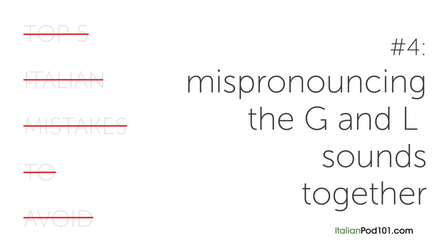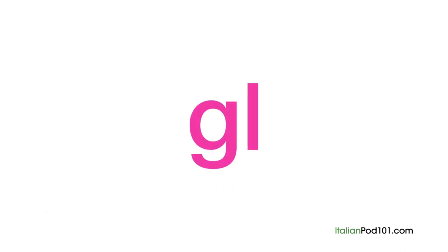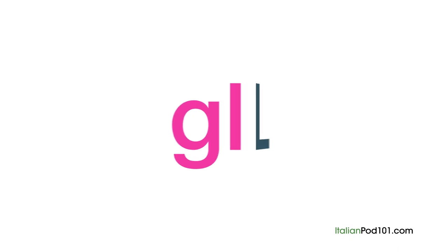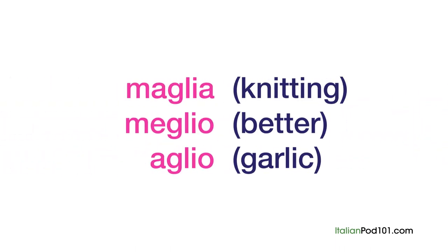Number four: mispronouncing the G and L sounds together. This is another sound that's difficult for Italian learners to pronounce. It sounds somewhat like an English L, but not exactly. The problem arises when speakers begin substituting the regular L for this sound. Listen to Desiree and pay attention to the way it's pronounced. We'll break down this sound in Lesson 6.